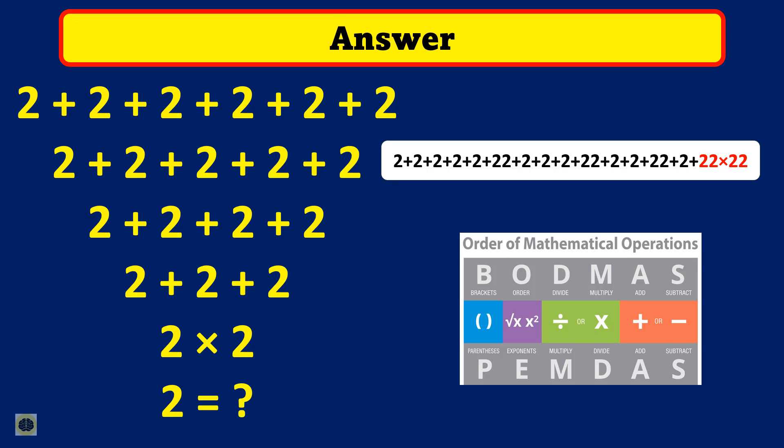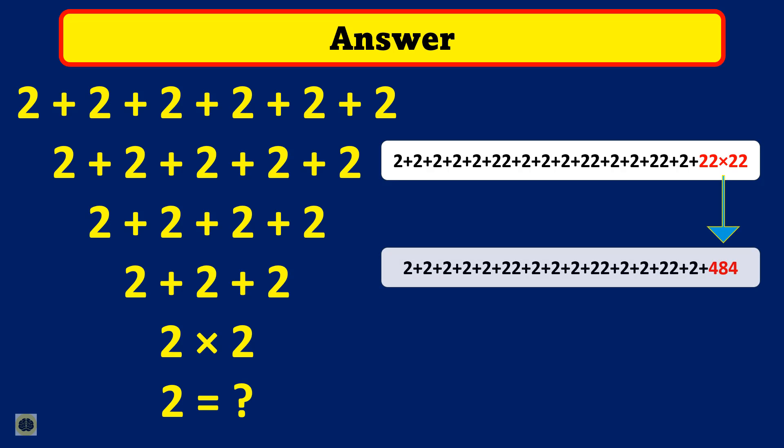Now let's get back to the problem. After performing multiplication according to BODMAS rule, the expression will be like this. Now perform the addition operation which will result in 572, which is the correct answer. So by following these simple steps, we can find the answer to these kinds of problems in less time and accurately.